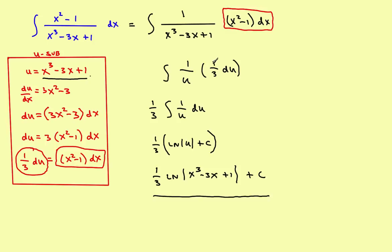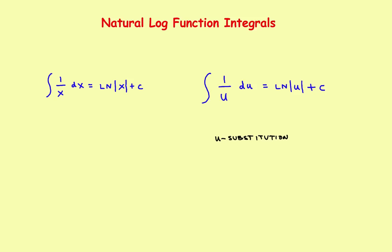Some problems require u-substitution. The argument goes like this: if the denominator is something more complicated than just a simple x, then to turn it into a 1 over u you're going to have to use u-substitution. If it's just a simple x, you don't need u-substitution and it turns into the natural log of x plus c. If it's 1 over something more complicated, you do need u-substitution, but the process will still be the same. That's the first set of examples on how to find integrals that involve the natural log function.